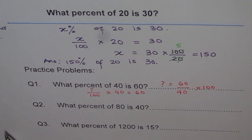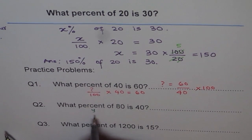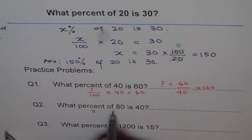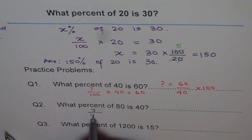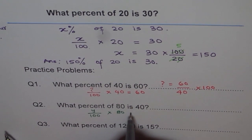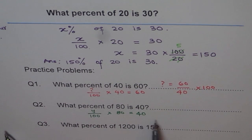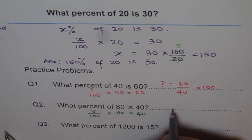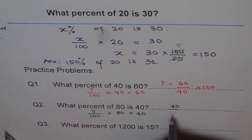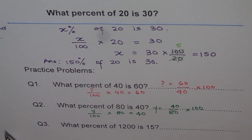You can use any variable — a question mark, or y. What percent of 80 is 40? You don't know, so y over 100 times 80 equals 40. Calculate y: 40 divided by 80 times 100. Do it yourself.